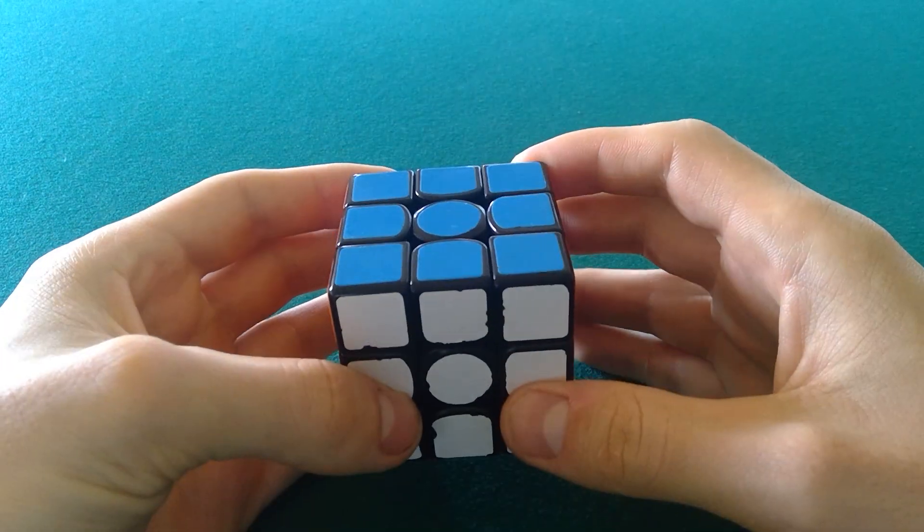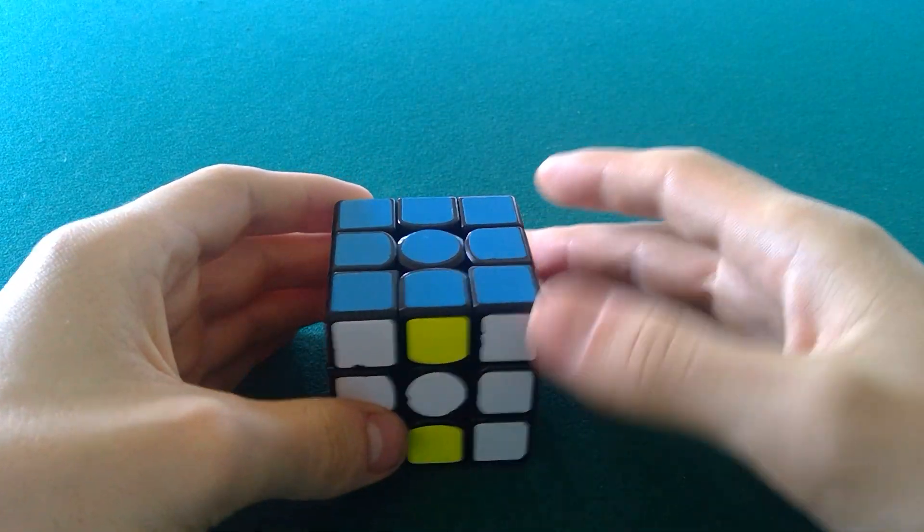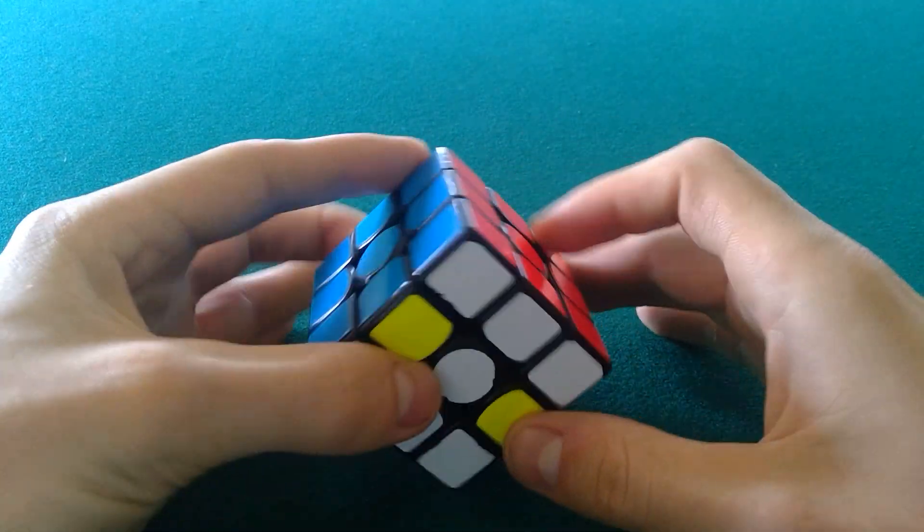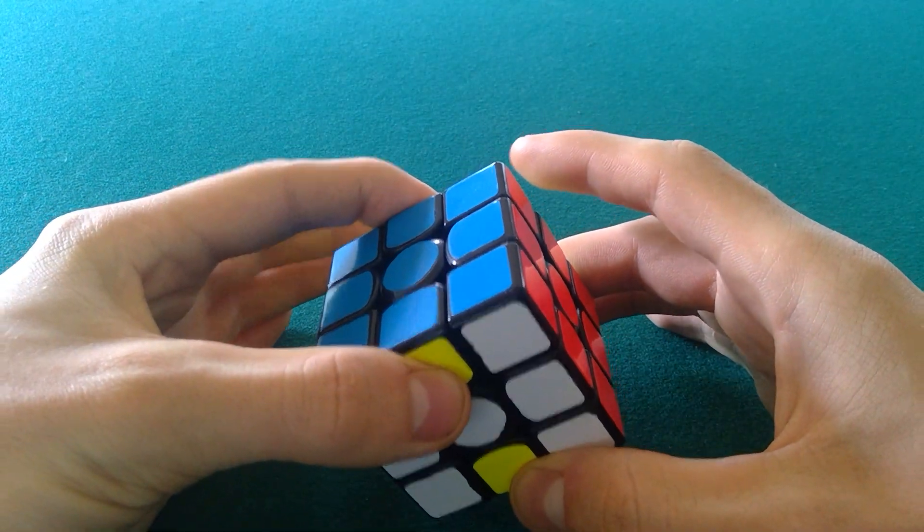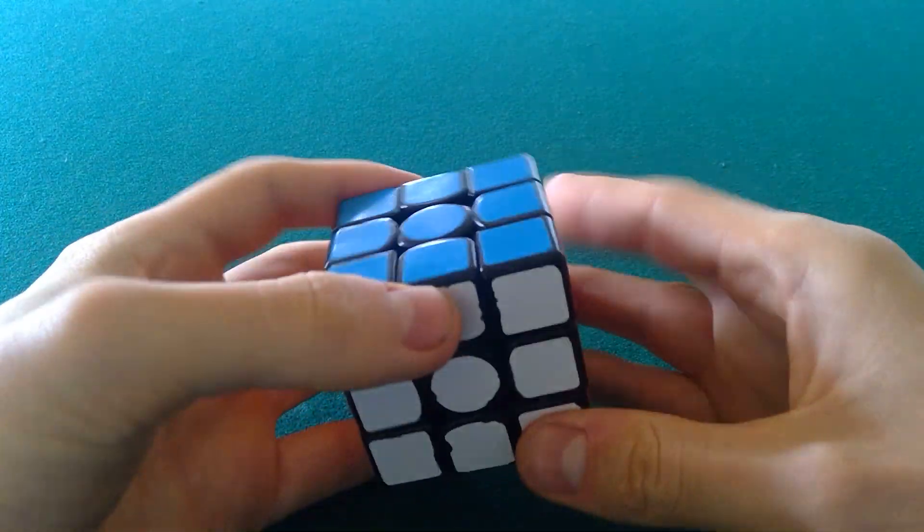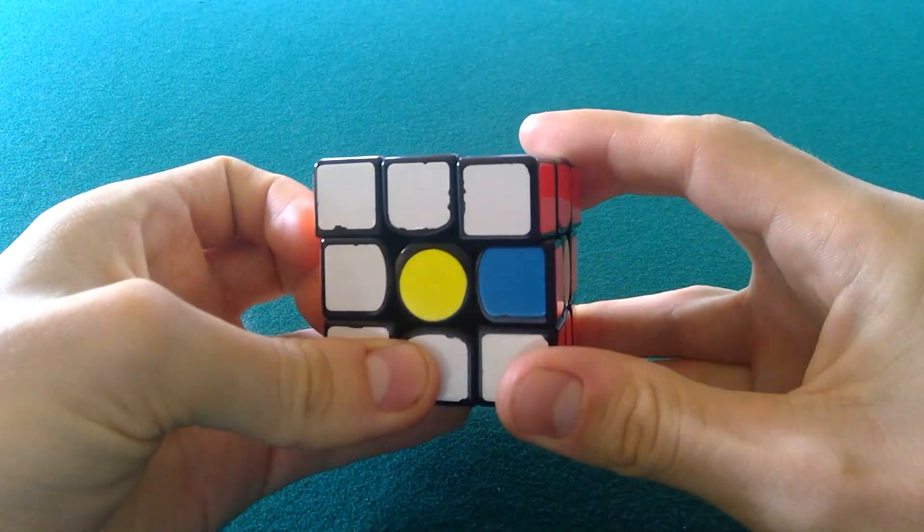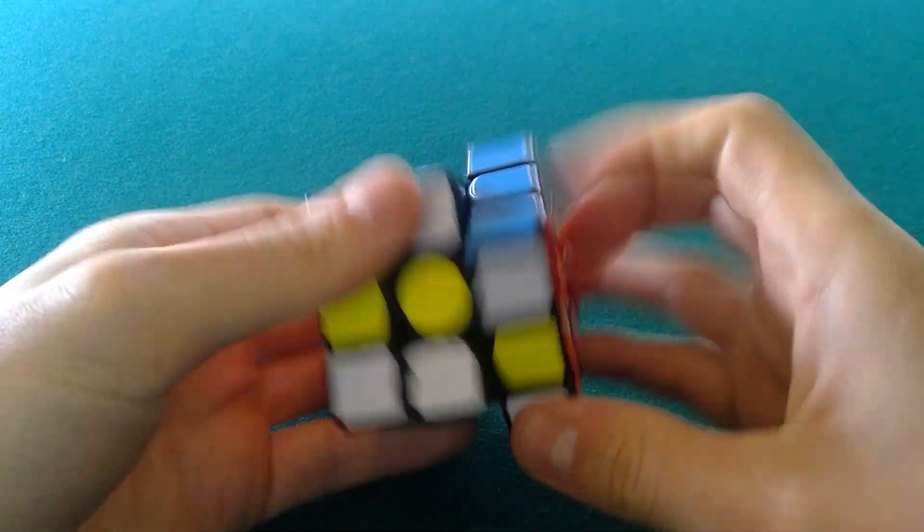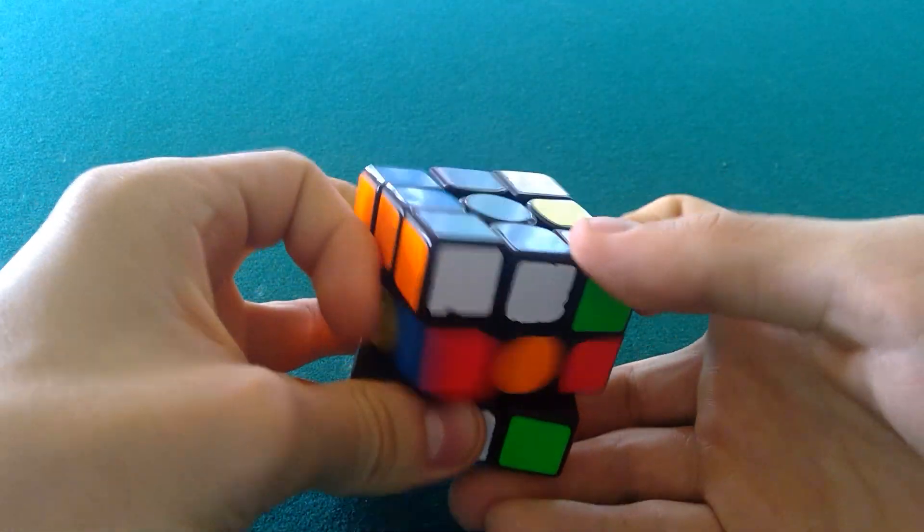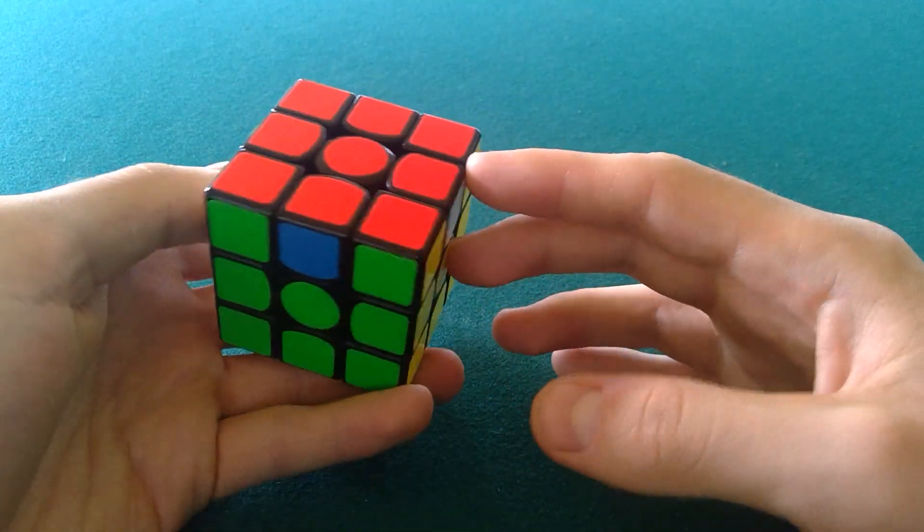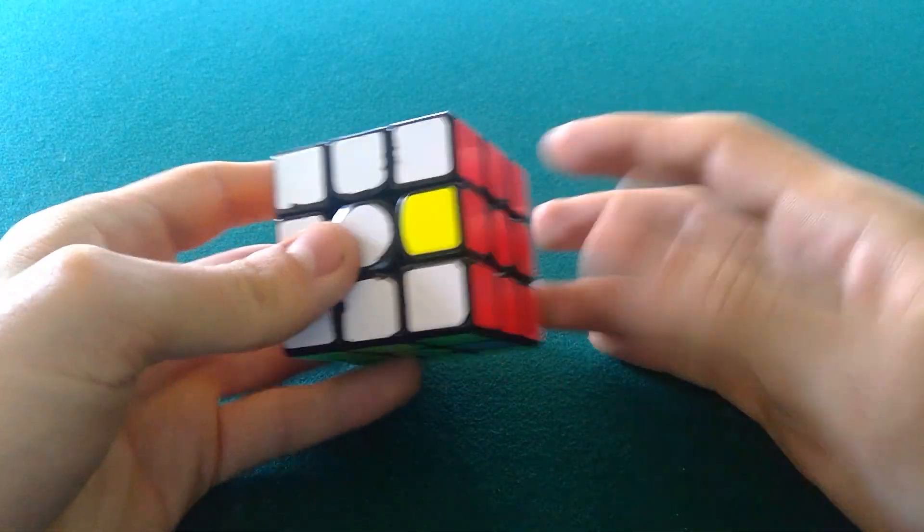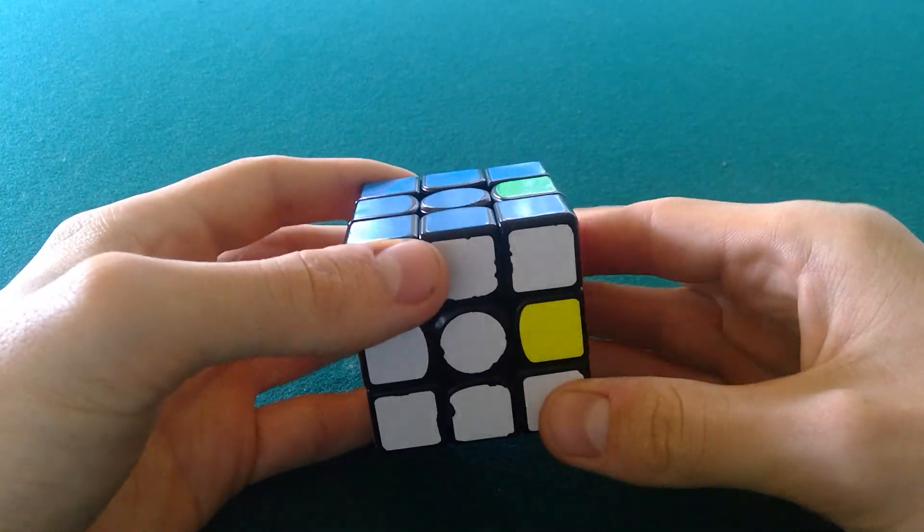First of all, the first situation you should use two swaps is when it's already set up, or if you have something like this - you have an H perm right here, I mean just do it.